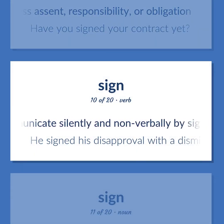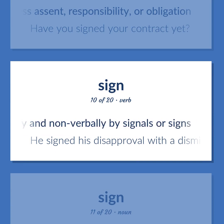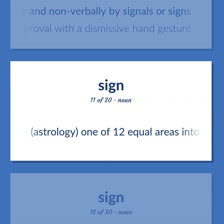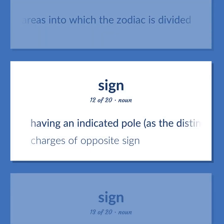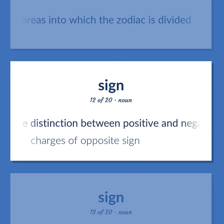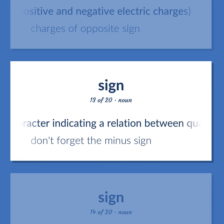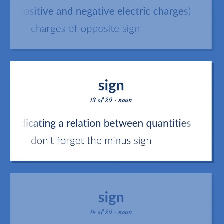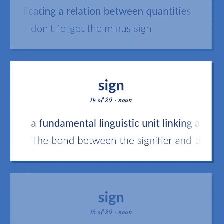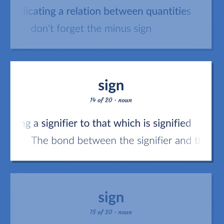Sign: Communicate silently and non-verbally by signals or signs. Example: He signed his disapproval with a dismissive hand gesture. Astrology: one of twelve equal areas into which the zodiac is divided. Having an indicated pole, as the distinction between positive and negative electric charges. Example: Charges of opposite sign. A character indicating a relation between quantities. Example: Don't forget the minus sign. A fundamental linguistic unit linking a signifier to that which is signified; the bond between the signifier and the signified is arbitrary.